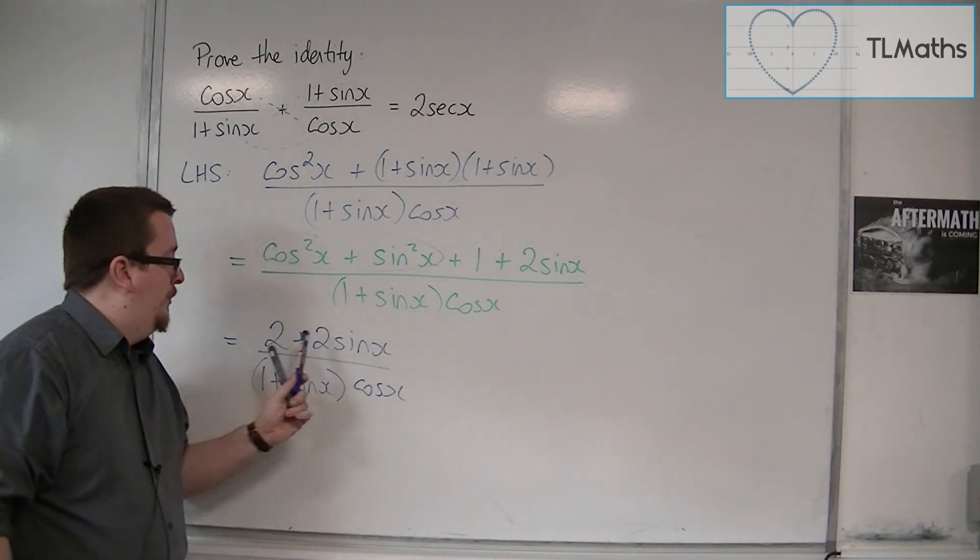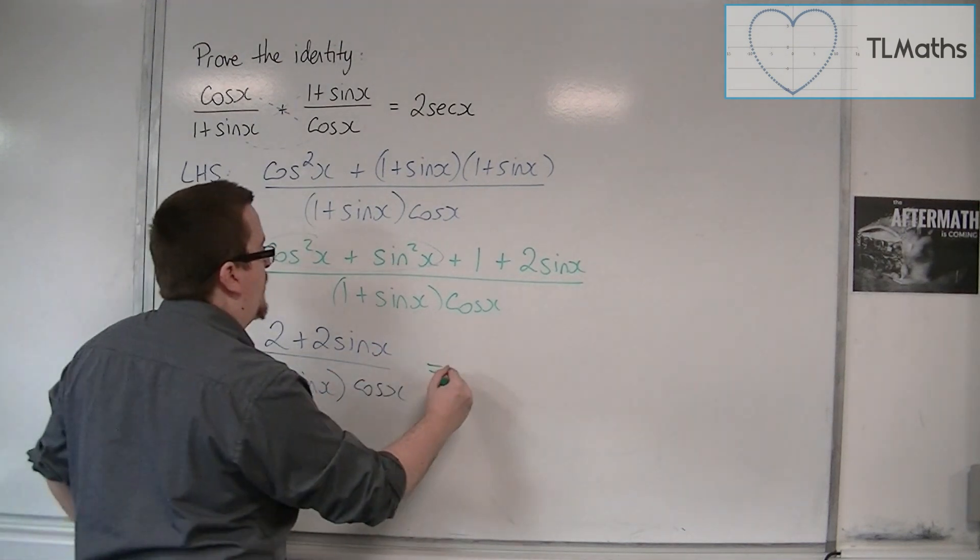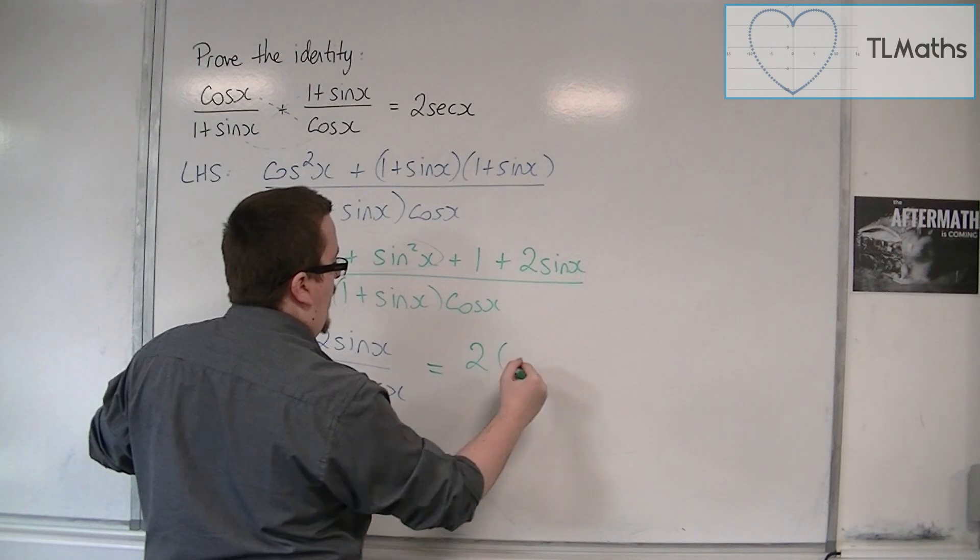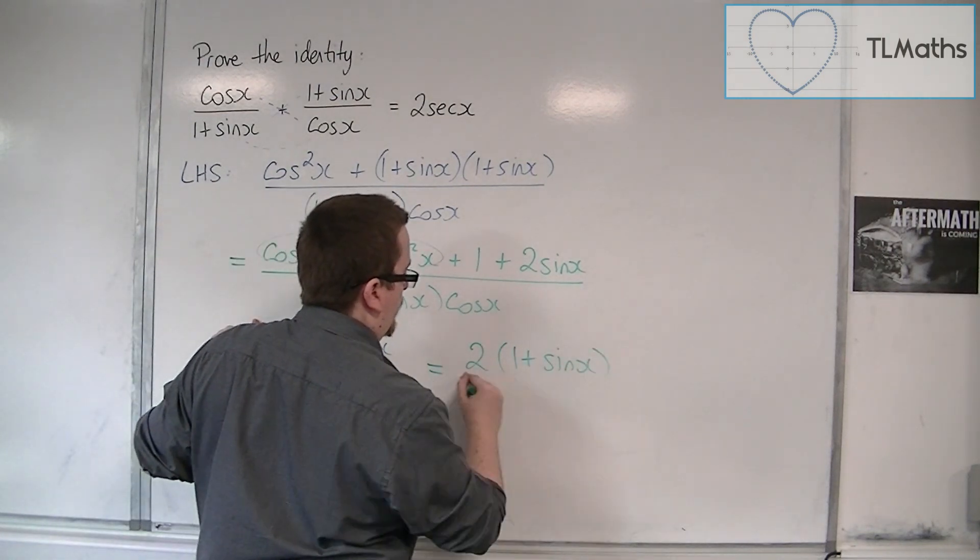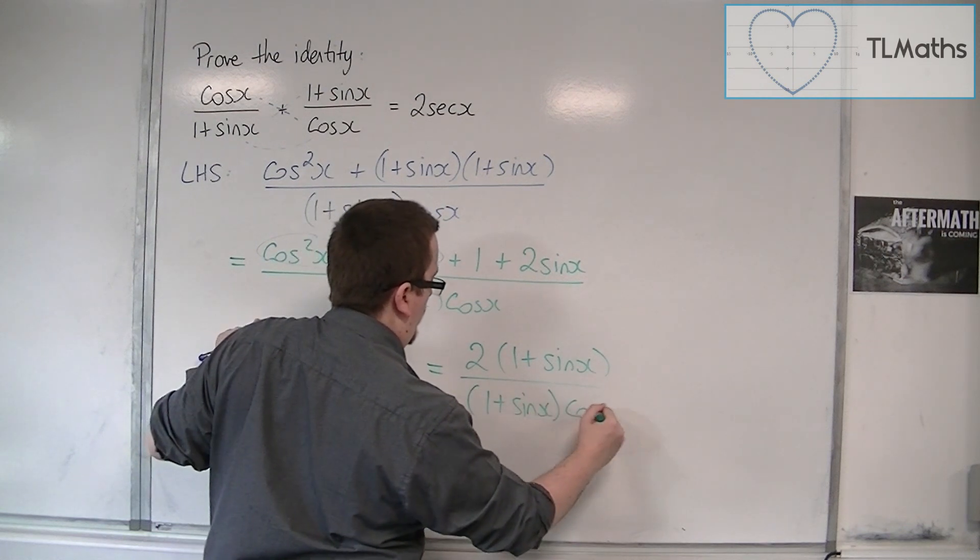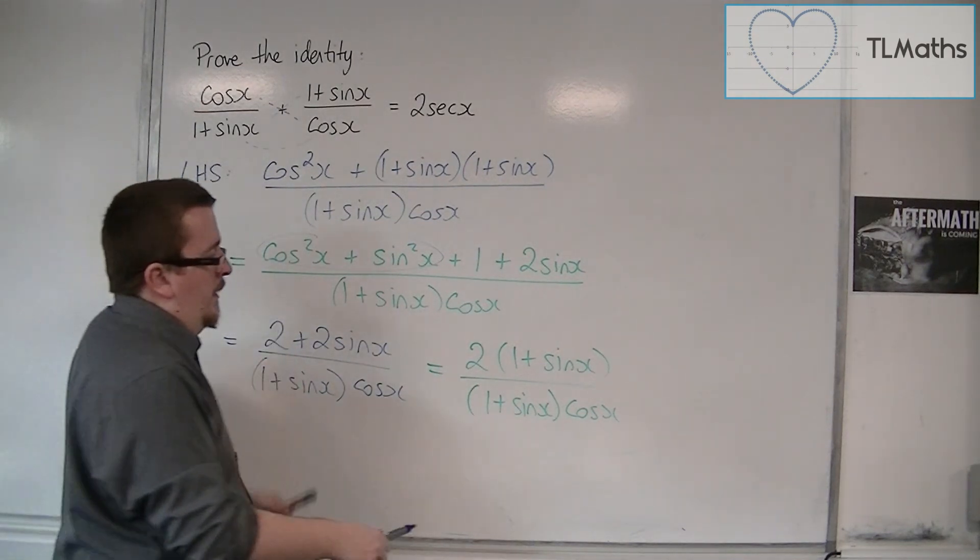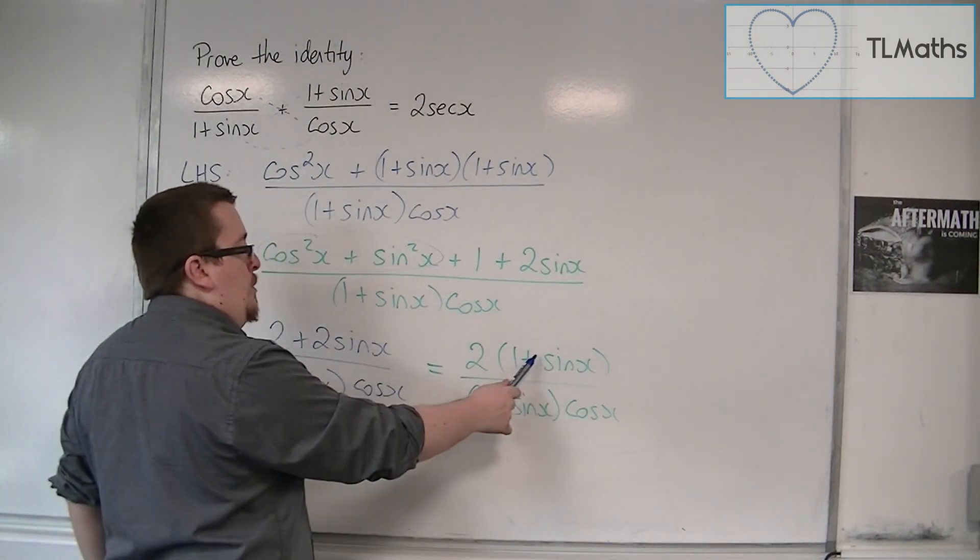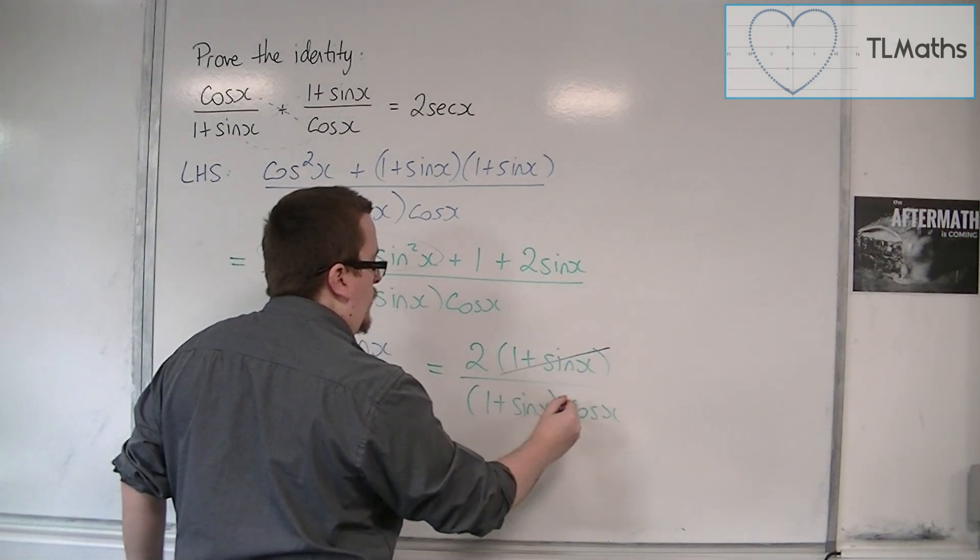Now, 2 plus 2 sin x can be factorized because you can take 2 out of a bracket of 1 plus sin x. And what we have now is 1 plus sin x in the numerator and 1 plus sin x in the denominator, and so they cancel one another out.